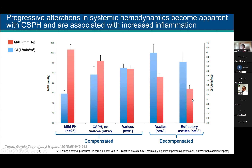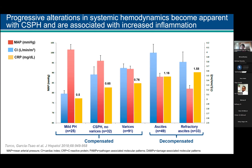In refractory ascites, the MAP went down even further. These patients are very vasodilated, but the cardiac index did not go up as one would expect — it actually was lower. We wonder whether this is part of cirrhotic cardiomyopathy, where the heart has been stressed all this time, and now with the patient getting sicker, there's even a decrease in mean arterial pressure. All of this is associated with increasing inflammatory state — C-reactive protein is higher and higher throughout all stages, including in those with refractory ascites, which may also be affecting the heart.